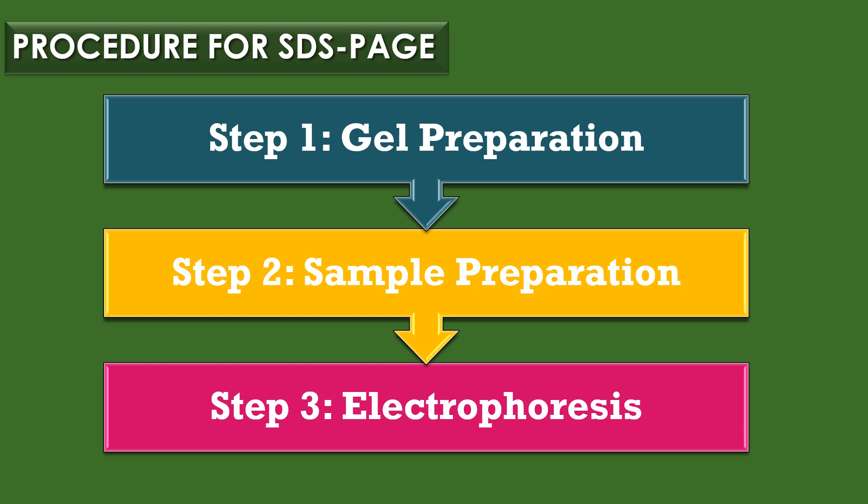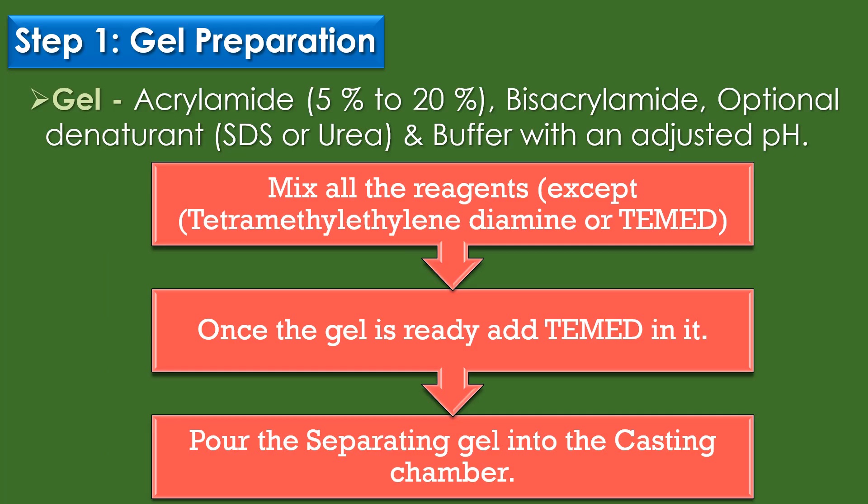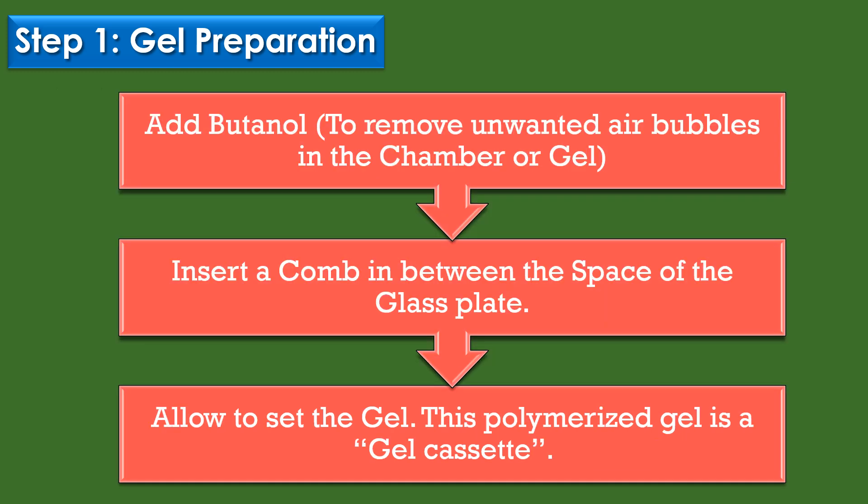Procedure for SDS-PAGE: SDS-PAGE contains three major steps — Step 1: gel preparation, Step 2: sample preparation, and Step 3: electrophoresis. For gel preparation, the gels typically consist of 5 to 20% acrylamide, bisacrylamide, optional denaturants like SDS or urea, and a buffer with an adjusted pH. First, mix all the reagents except TEMED, and once the gel is ready, add TEMED and pour the separating gel into the casting chamber. To remove air bubbles, add butanol, then insert a comb between the glass plates, and allow the gel to set.